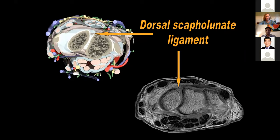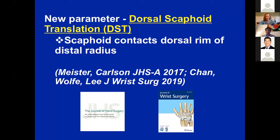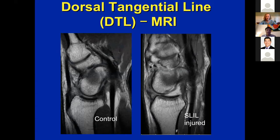In axial images, you can see the dorsal scapholunate ligament — and in coronal images as well. I like to look at the axials on MRI, where you can also see the volar scapholunate ligament. On coronals, you can see the weaker proximal component. A new parameter we published is the dorsal scaphoid translation — where the scaphoid moves dorsally in context of the dorsal rim of the distal radius. In controls, the scaphoid sits congruently in the pocket of the radius; with dorsal translation, the scaphoid is kicked out onto the dorsal rim. This is visible on static MRI.